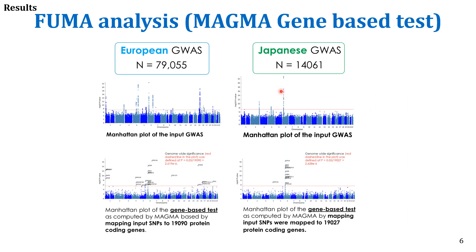The first step in the analysis was that a MAGMA gene-based test was performed, and the gene-associated loci obtained from the input GWAS summary statistics were mapped to the reference genomes to check the position of the corresponding genes. For the Japanese population, the East Asian reference genome was used, and for the European population, the 1000 Genomes Project European reference genome was used.